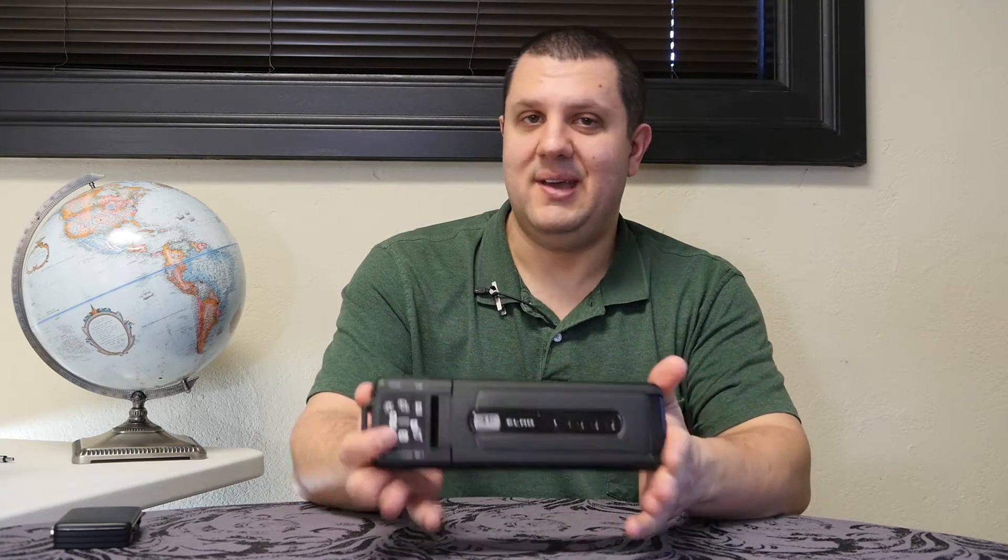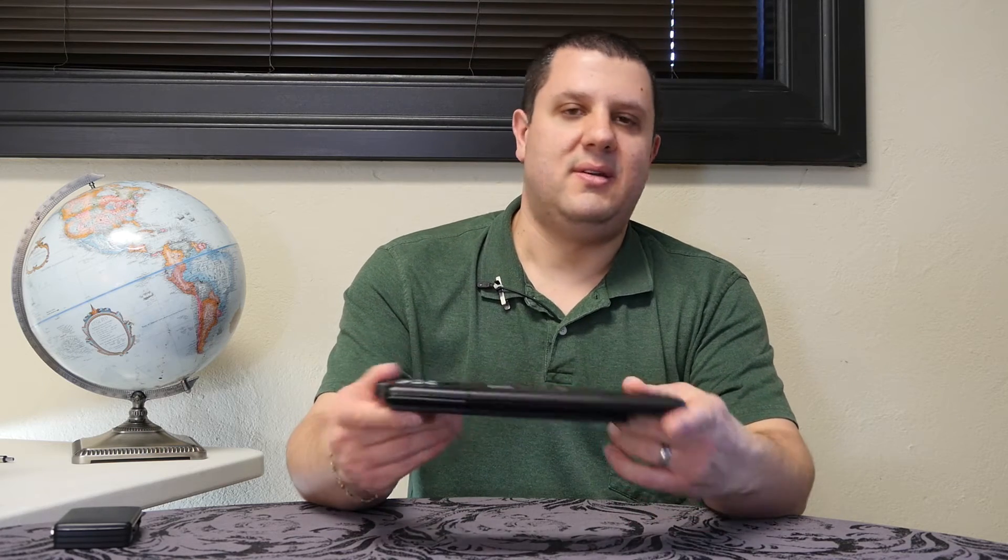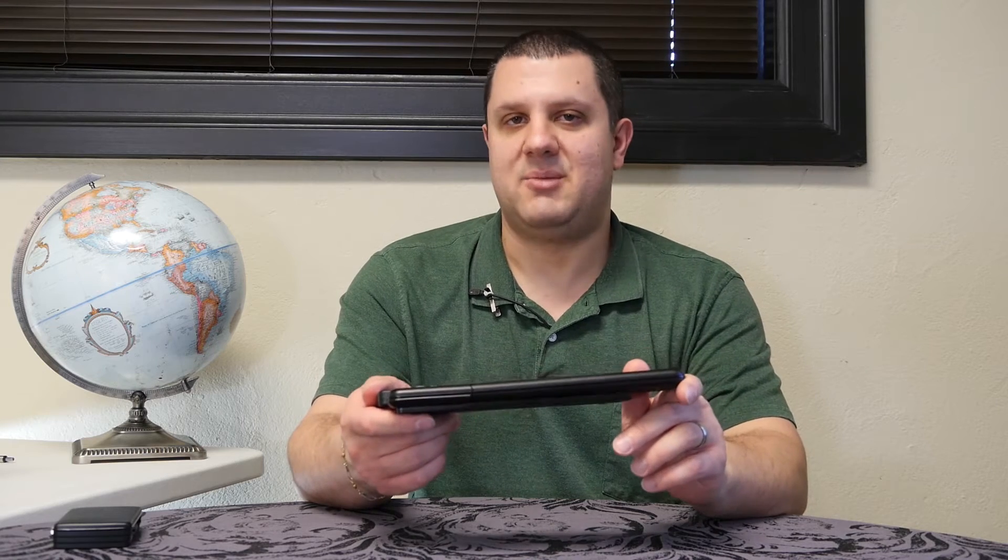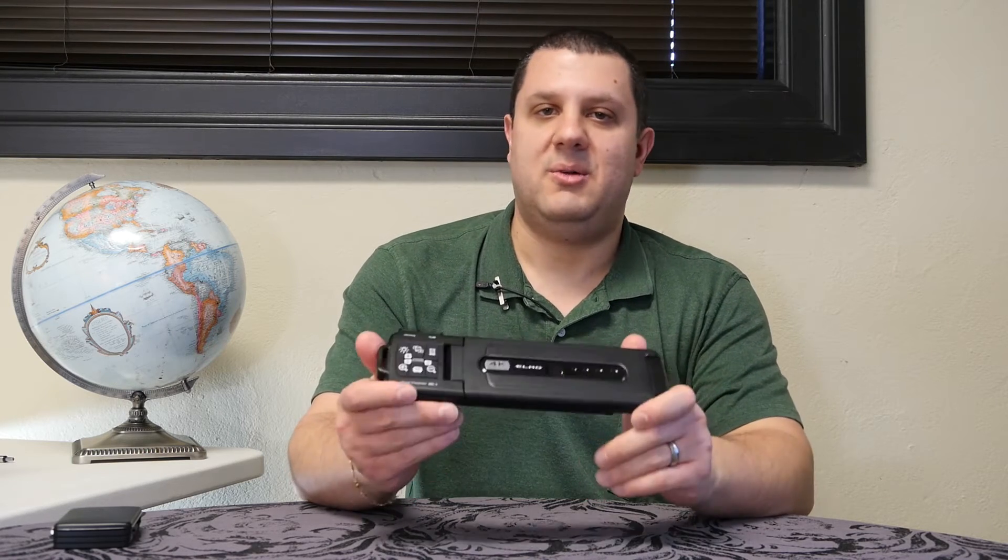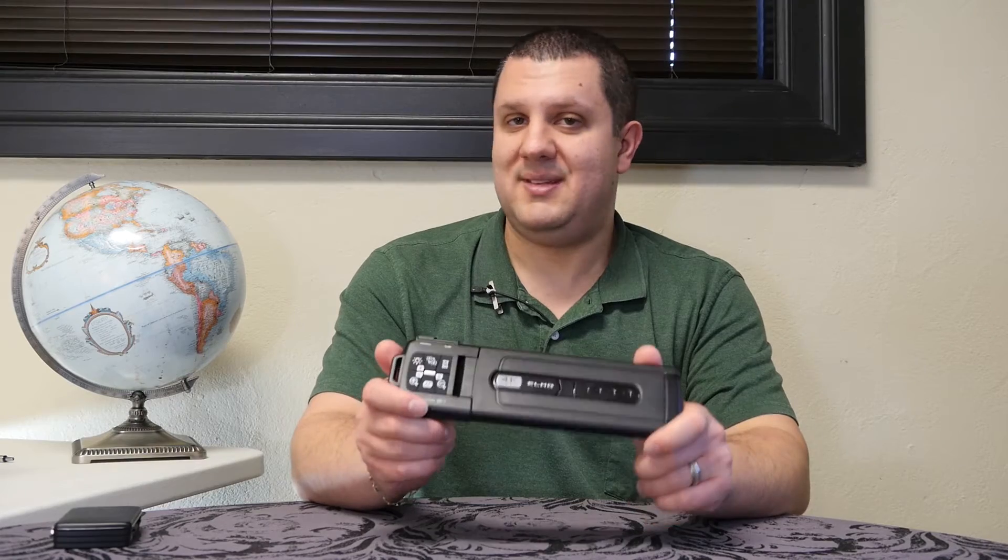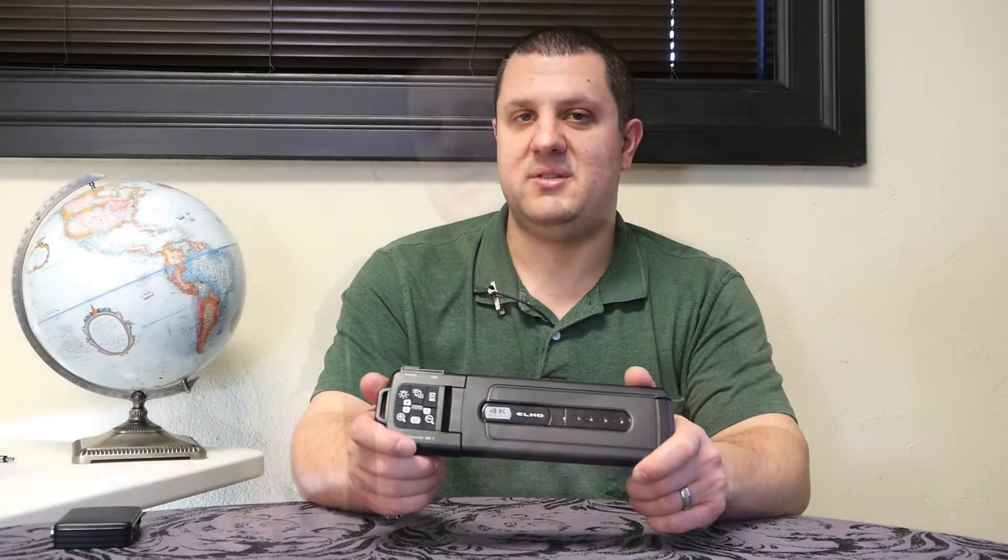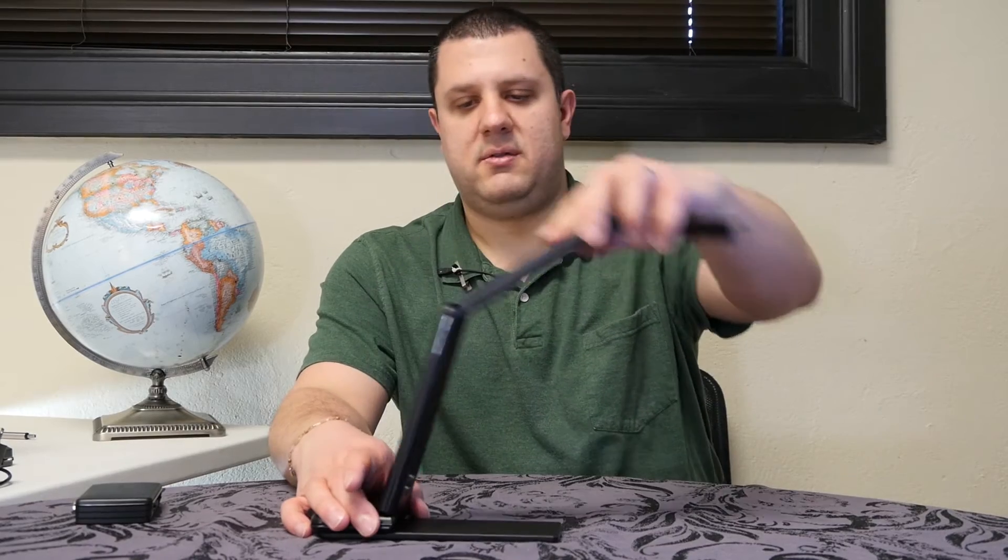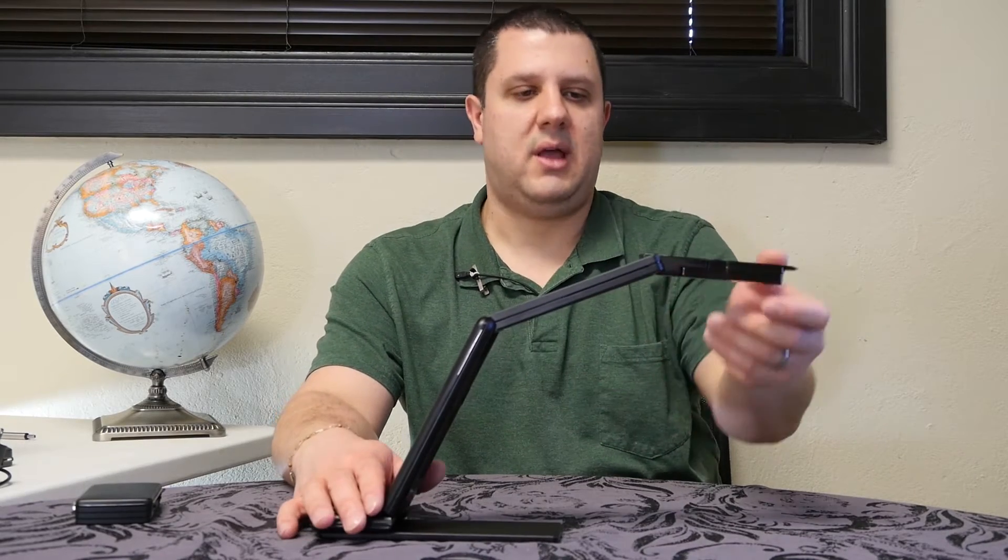All right, so here's our next competitor, the Elmo MX-1. Now the MX-1 claims to be the smallest, thinnest, lightest document camera in its class. Elmo claims 13 megapixels with this and above 4K video resolution. The camera opens up like so.